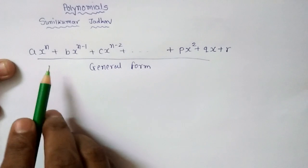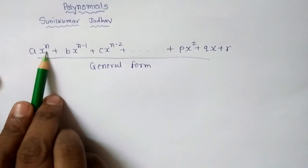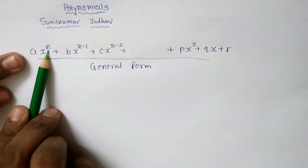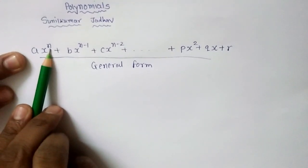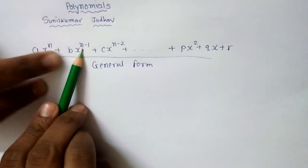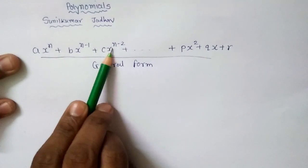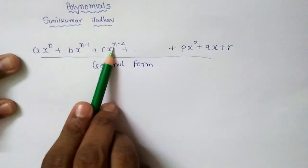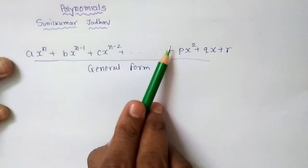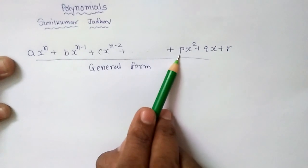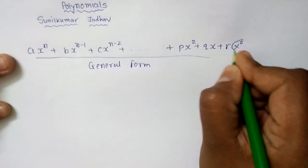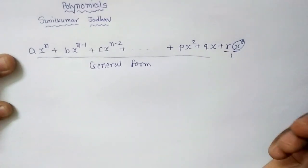The value of n can be anything. For example, if n is equal to 10, then the first term is a into x raise to 10, the next term is b into x raise to 9, then c into x raise to 8, then d into x raise to 7, and so on: x raise to 6, 5, 4, 3, 2, 1, and finally x raise to 0. Since anything to the power 0 equals 1, the last term is a constant.